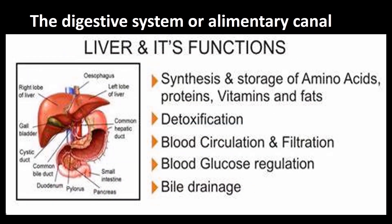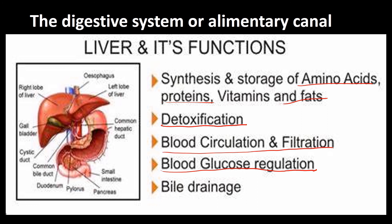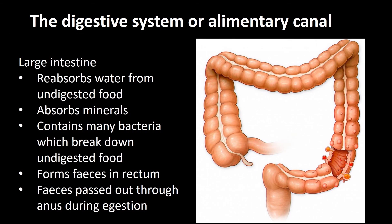The liver stores some amino acids, proteins, vitamins, fats, and excess glucose. It also detoxifies the blood — removing anything poisonous — filters the blood, and produces bile. Essentially, the liver checks to make sure that what goes to your cells is just right.